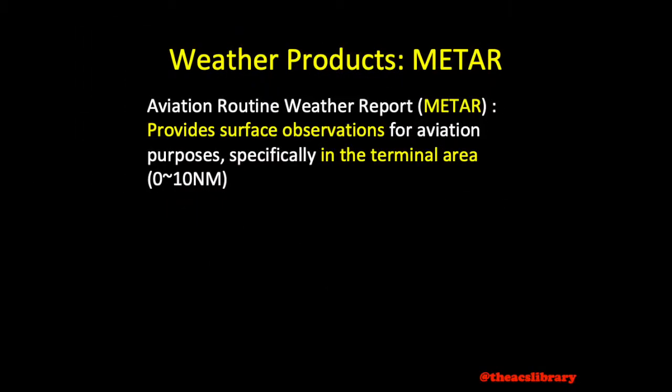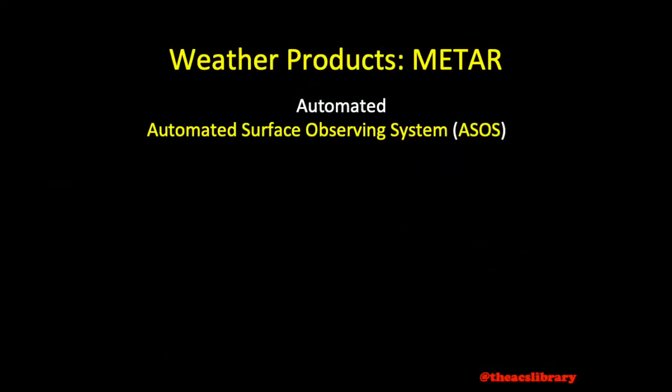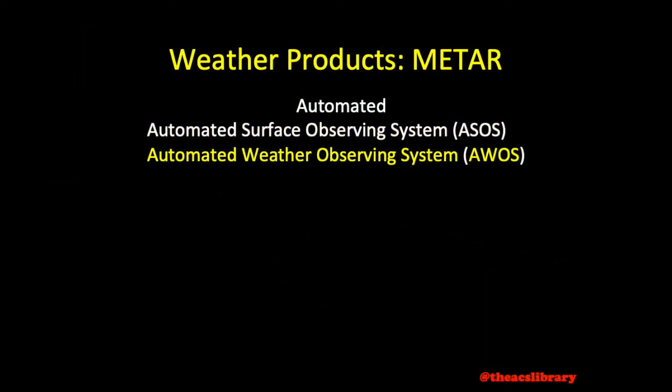The METAR provides surface observation for aviation purposes, specifically in the terminal area. The observation may be provided manually by a human weather observer certified by the National Weather Service or FAA, or it may also be provided automatically. The two most common automated systems are the Automated Surface Observing System or ASOS and the Automated Weather Observing System or AWOS. These systems report weather conditions in the vicinity of the tower.